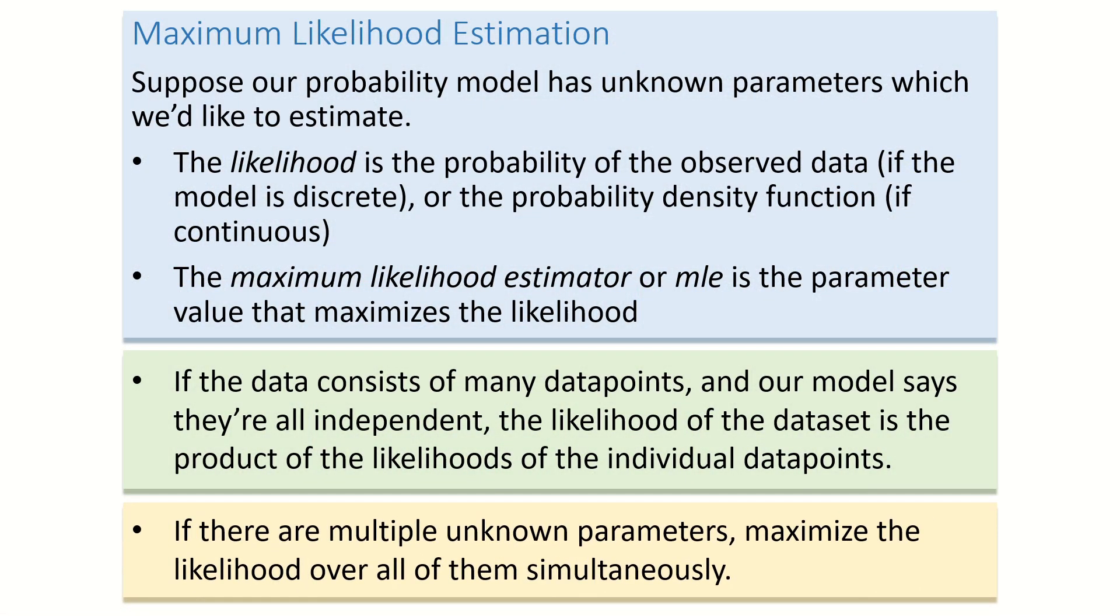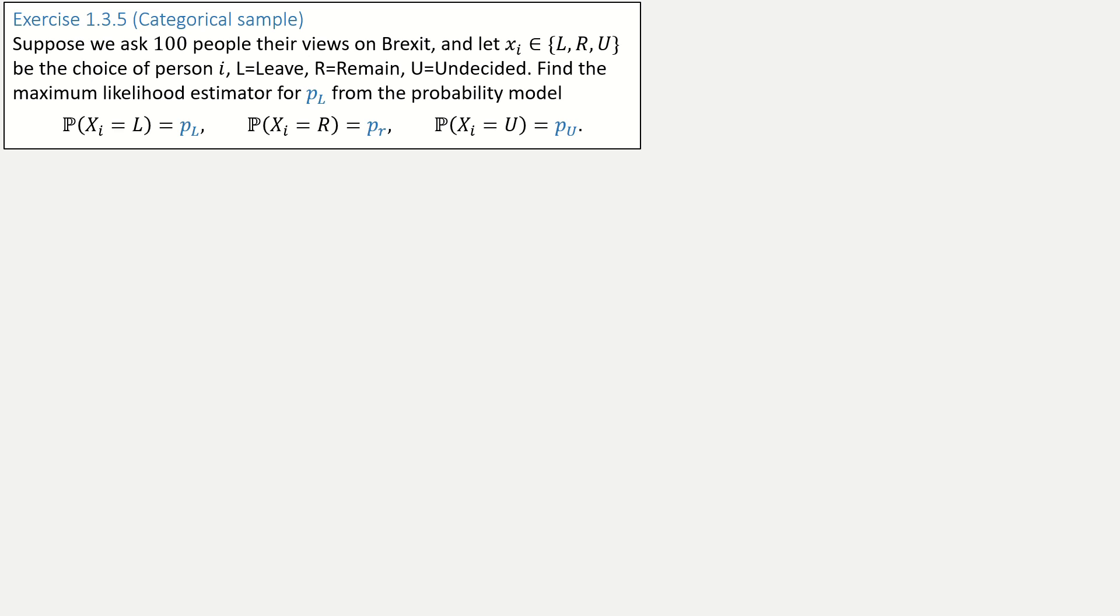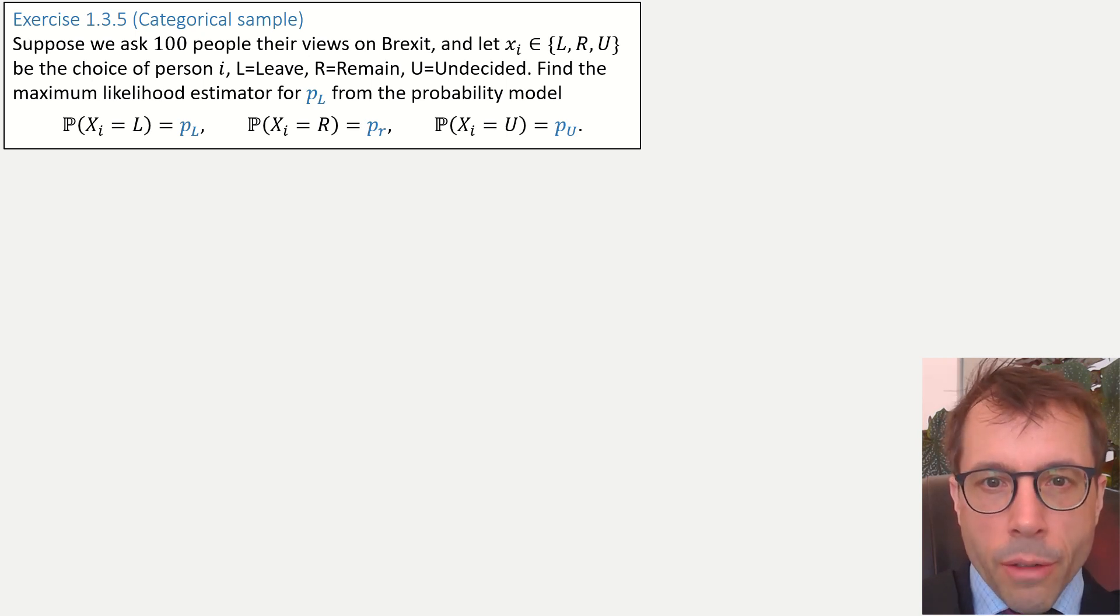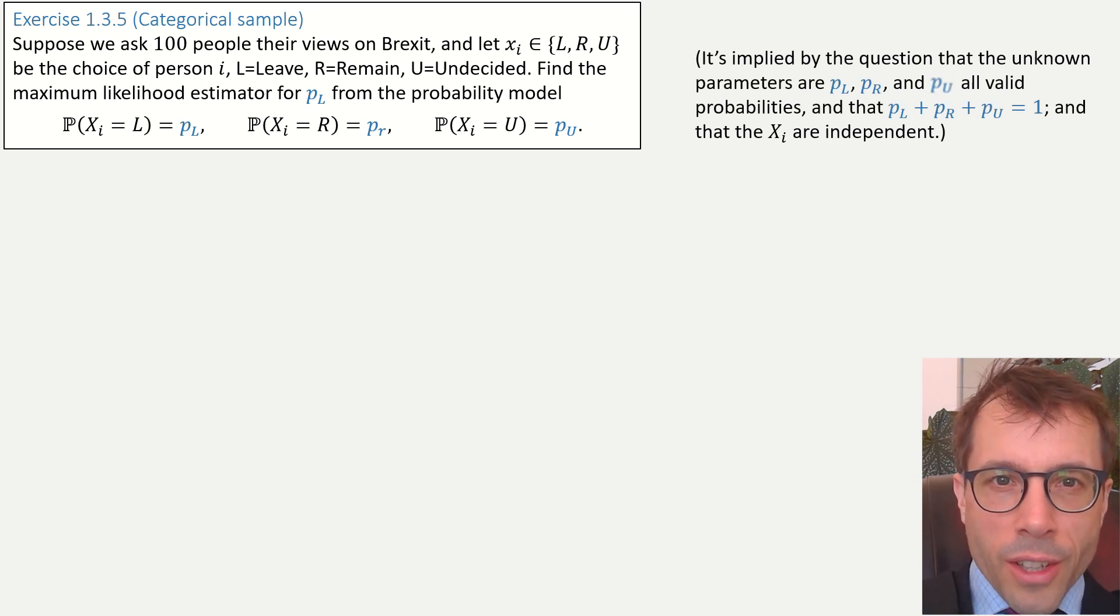The third rule of maximum likelihood estimation is that you must always maximise over all the parameters in your model. Let's work through an example. Pause the video and read the question. Before we get going, just a small comment about conventions. This question leaves a lot unsaid. It doesn't explicitly tell us, for example, what the unknown parameters are. You're expected to infer what the unknown parameters are meant to be. In this case, to infer that it's the three properties PL, PR, and PU that are unknown. Next, it doesn't explicitly say that the random variables xi are independent. But, as we discussed in an earlier video, it's a standard convention that will assume independence unless we're explicitly told otherwise.